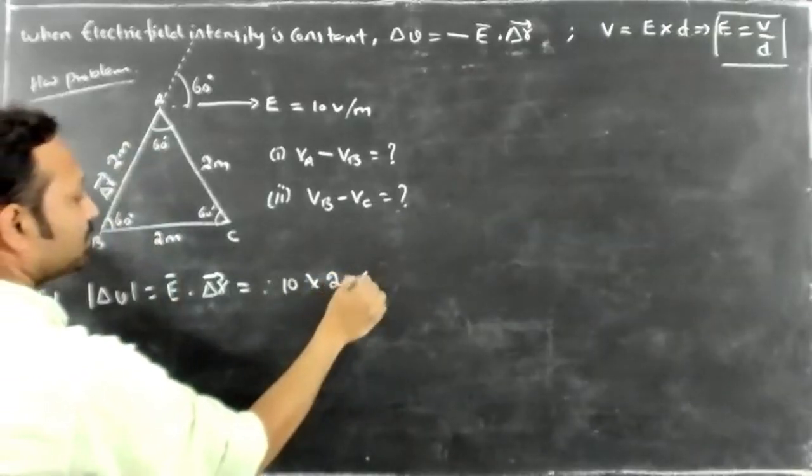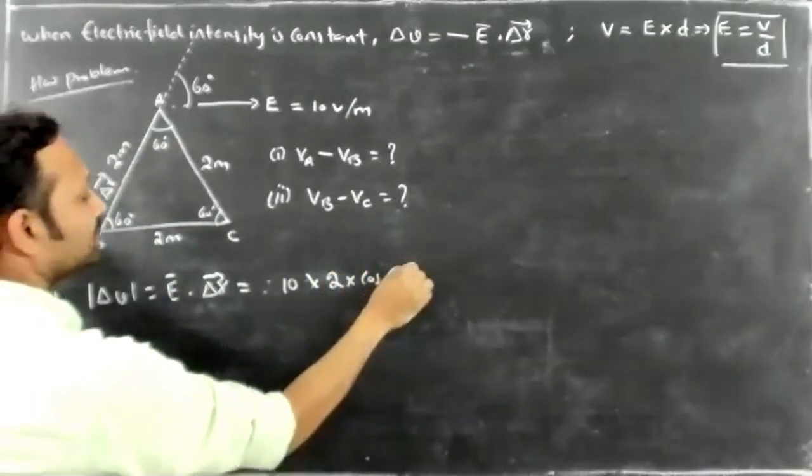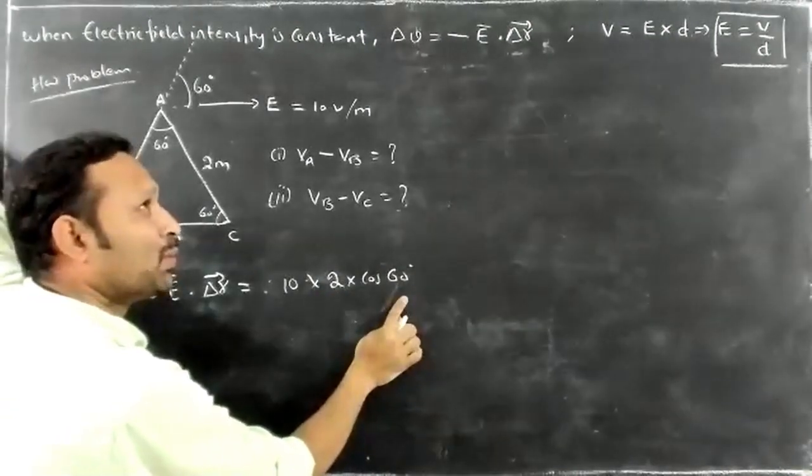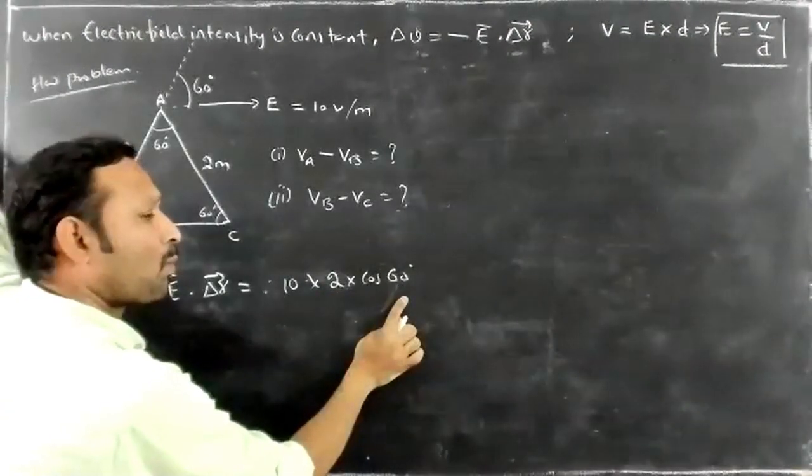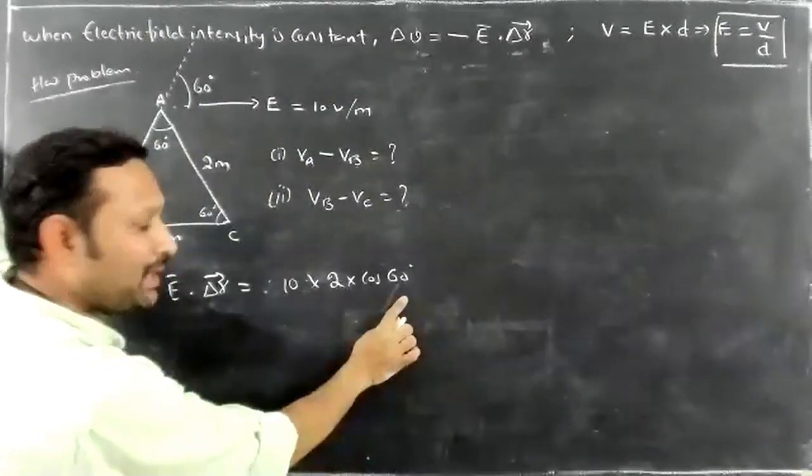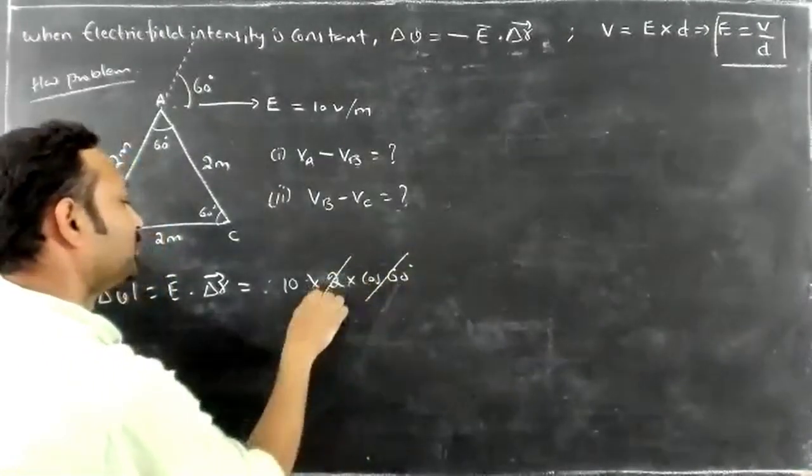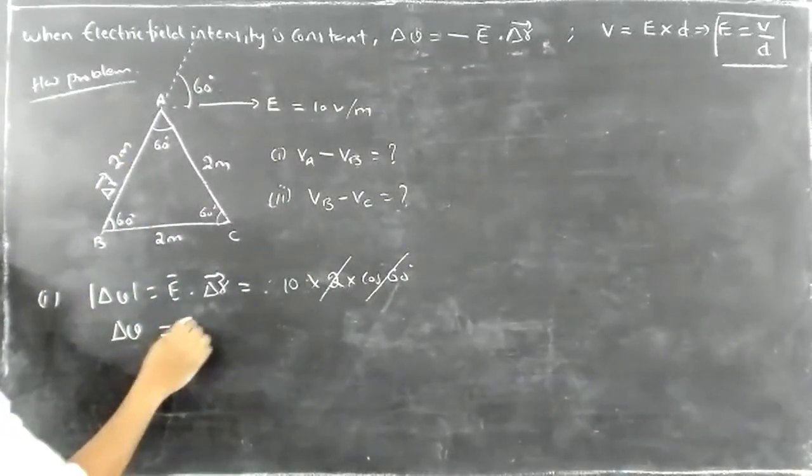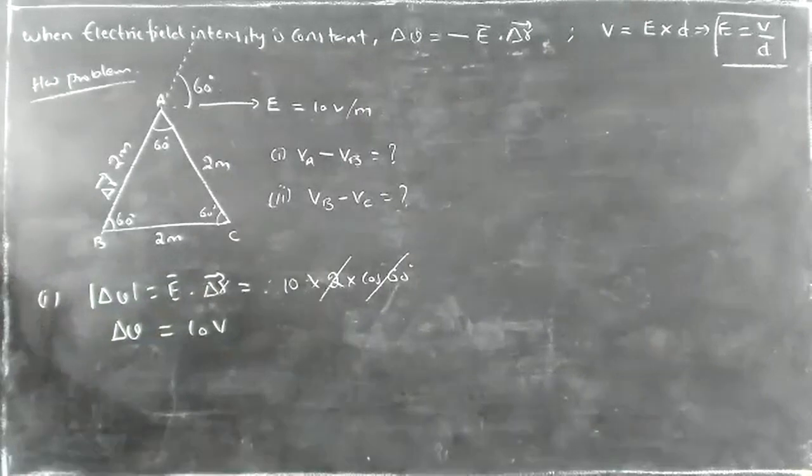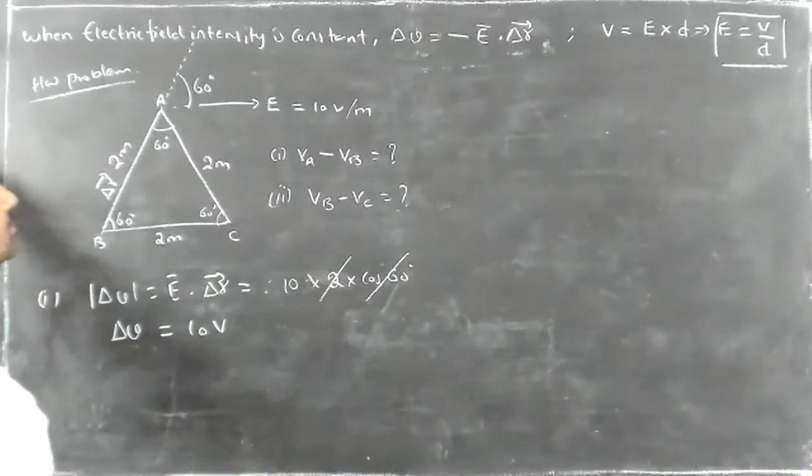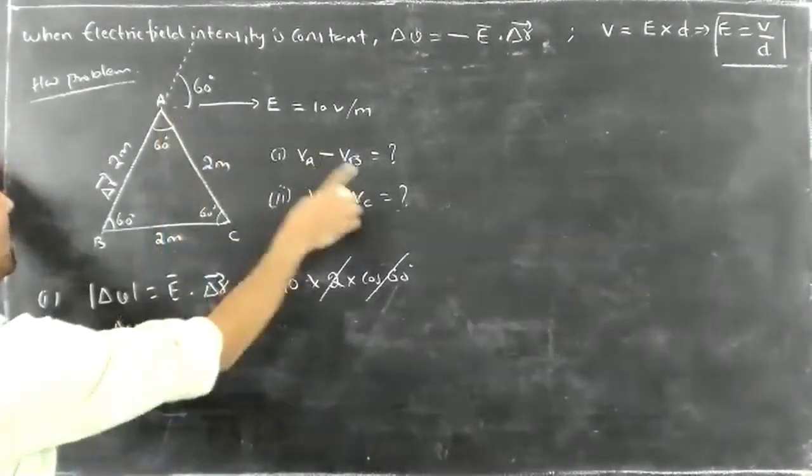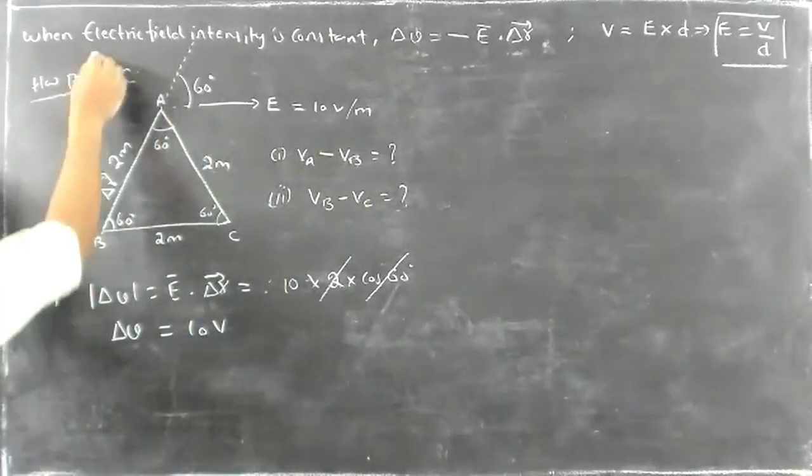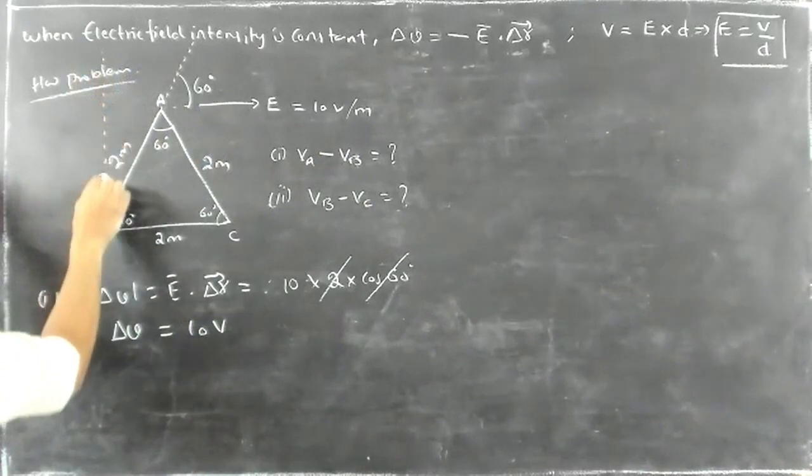It is equal to E into cos theta R. Therefore here, cos 60 value, 1 by 2. Right, 1 by 2, 2 then cancel. And then delta V magnitude value is 10 volt.